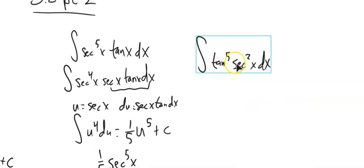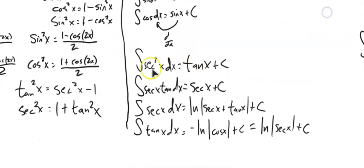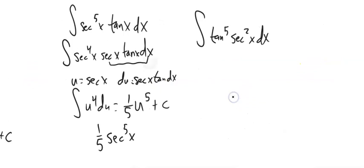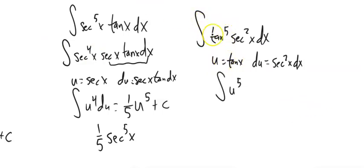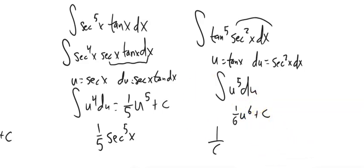Example 2: ∫tan⁵x · sec²x dx. I see sec²x here — that's the derivative of tangent, so I'm set for u-substitution. Let u = tan x, then du = sec²x dx. I substitute: ∫u⁵ du = (1/6)u⁶ + C = (1/6)tan⁶x + C. Straightforward!